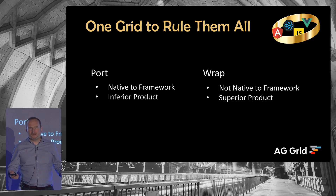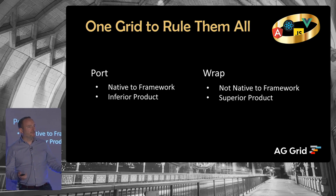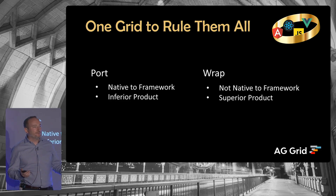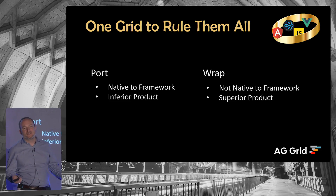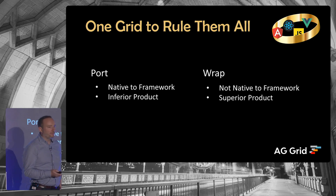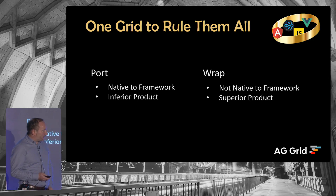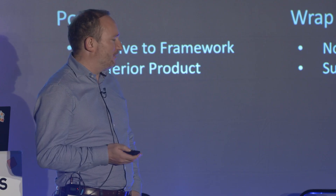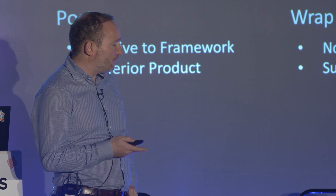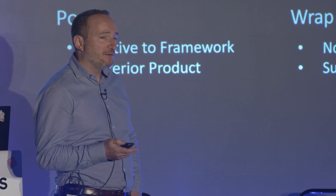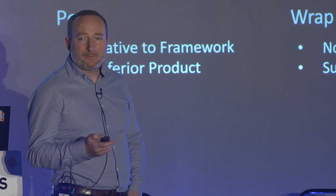So what we want is to get our dev team working on one grid, which leads to wrapping. Wrapping means our grid is written in JavaScript, and then we have a thin layer of Angular, React, or Vue on top of it to make it look like it's in the framework of your choice — a bit like a wolf in sheep's clothing. What I'm going to talk about is that challenge, how we overcame it, and how today we have a really cool solution. What we used to do was wrap — one JavaScript data grid, wrapped for the different frameworks.